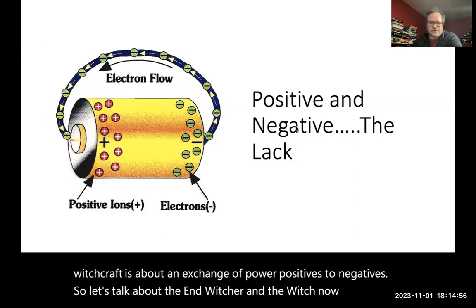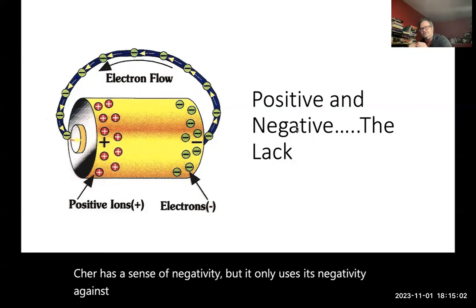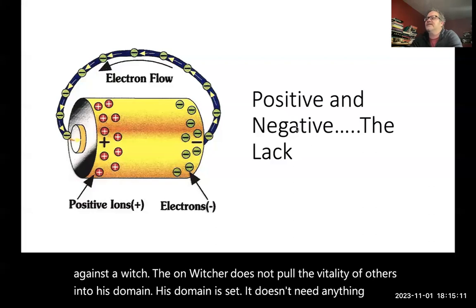An unwitcher has a sense of negativity, but it only uses its negativity against a witch. The unwitcher does not pull the vitality of others into his domain. His domain is set. It doesn't need anything.